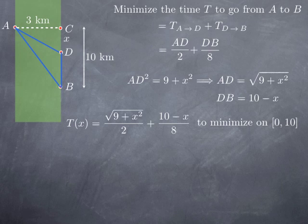Why on the closed interval [0, 10]? X equals 0 corresponds to going straight across to C, and X equals 10 corresponds to going all the way from A to B and emerging from the marshes at B. It would make no sense for X to be negative, because that means emerging north of C, which would take more time than emerging at C. Similarly, X greater than 10 would mean emerging south of B, which would take more time than going straight to B. So we have a continuous function on a closed interval, and we know the minimum exists and can only occur at an endpoint (0 or 10) or at a critical value.